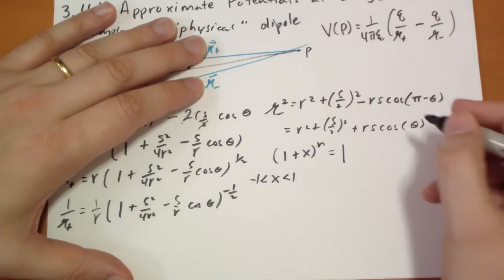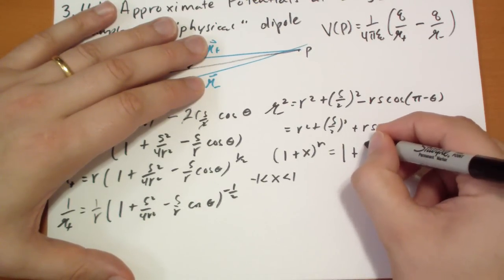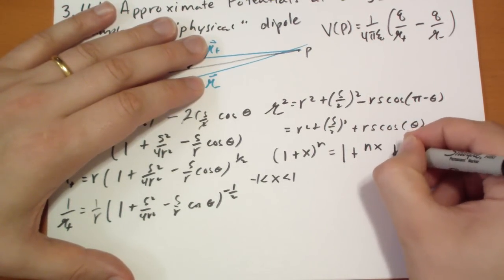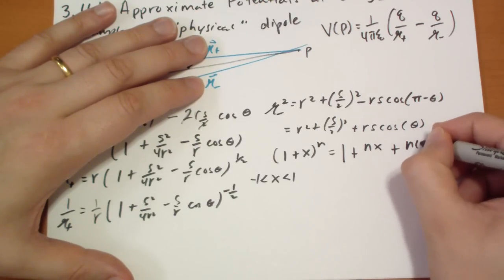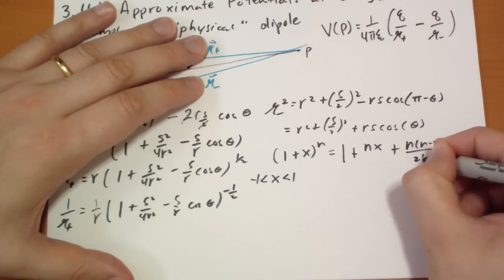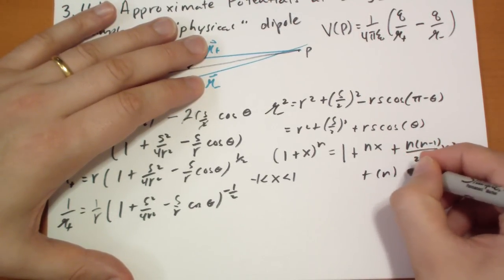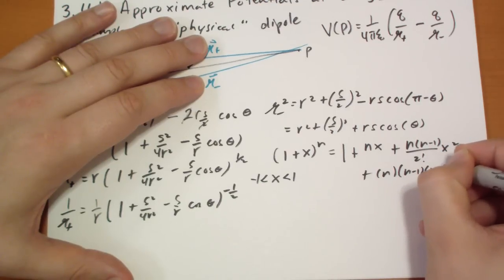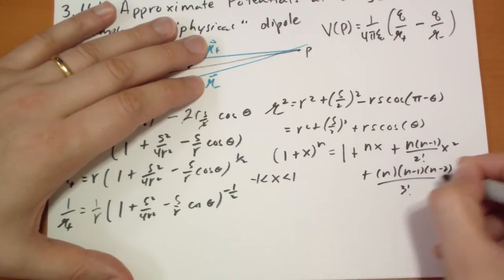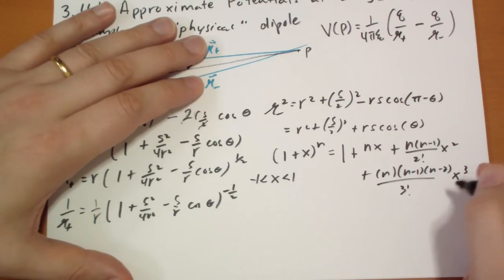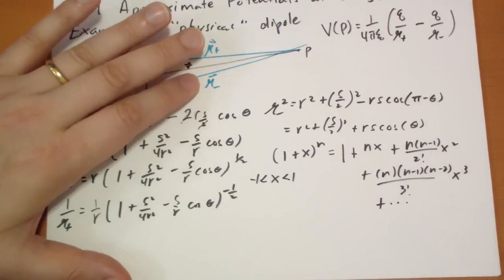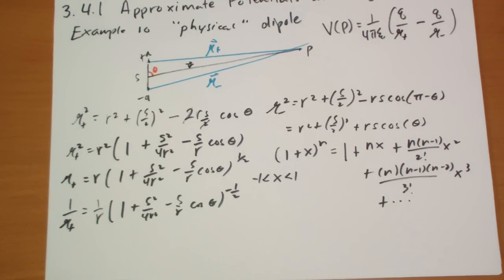So when you have the case, you have like 1 plus X to the n-th power. It doesn't matter what n is, it doesn't matter what X is, as long as X is between 1 and negative 1, which, in this case, these two terms, well, S is small, R is large, so both of these shouldn't cause a problem for making a huge second factor, right?